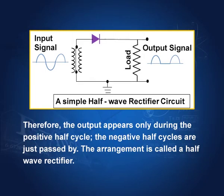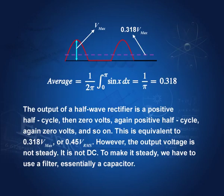The negative half cycle is cut out because there is no current through the P-N diode when it becomes negative — there is no current flowing through the junction. Therefore, in the output signal, the negative half is removed. We have positive half, then zero, then positive half. This is called a half-wave rectifier because only half the signal is rectified. The output is repeated positive half cycles with zeros between them.